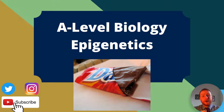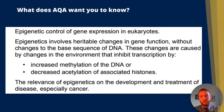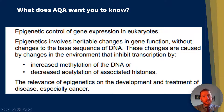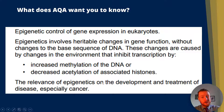So let's get into epigenetics. This is one of my favorite topics to teach because it's on the cutting edge of biological research. What does AQA want you to know? It wants you to know all about the epigenetic control of gene expression in eukaryotes. Epigenetics involves heritable changes, which means they can be passed on in gene function without changes to the base sequence of DNA. These changes are caused by changes in the environment that inhibit transcription by increased methylation of the DNA or decreased acetylation of associated histones. The relevance of epigenetics on the development and treatment of disease, especially cancer, is something that AQA have highlighted.